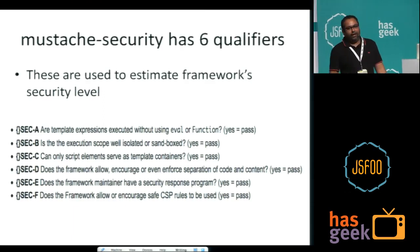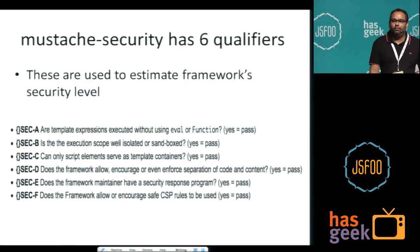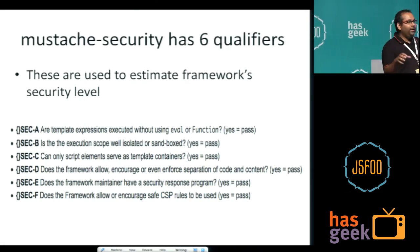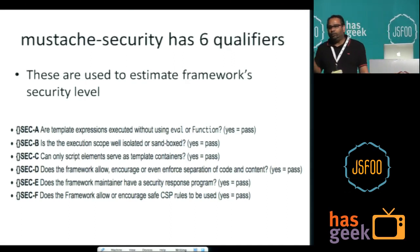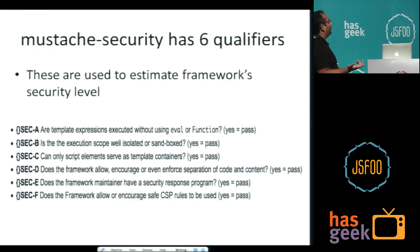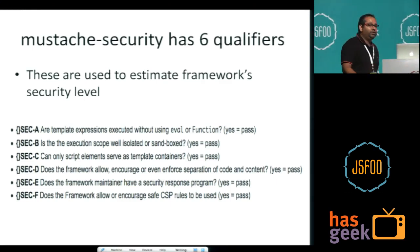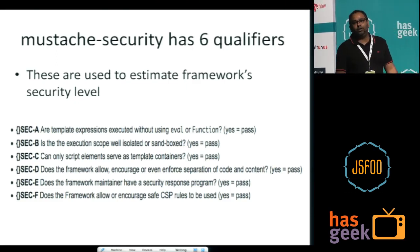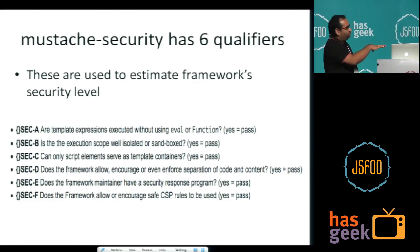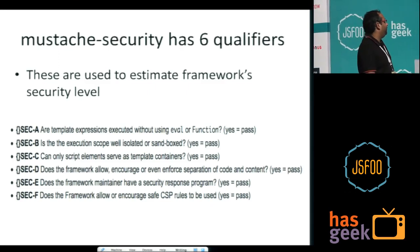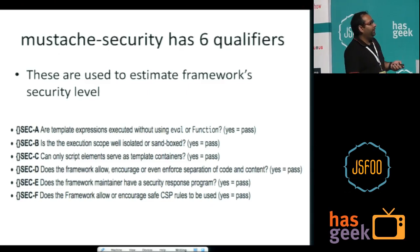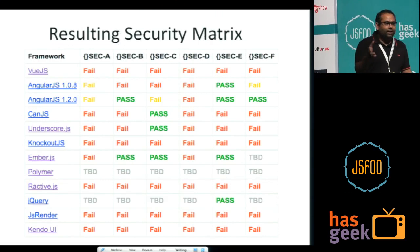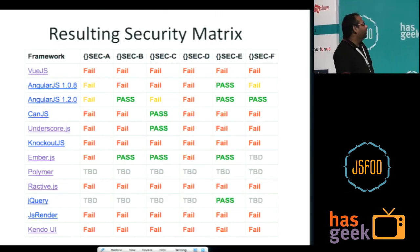One of the interesting things they have done — Mustache Security people, there's mostly one person, Mario, behind it, but maybe there are contributors — they have created some six qualifiers. These qualifiers help us estimate a framework's security level. We don't have time to talk about all six. But the interesting ones are: are template expressions executed without using eval or function? Because some of the modern browsers, the newer versions, will complain when that happens, especially if something called CSP is enabled. The one I'm going to go into a little more detail is SecF: does the framework allow or encourage safe CSP rules to be used? This matrix is basically around seven to eight months old, so the versions may not match. But they just looked at a bunch of these frameworks.